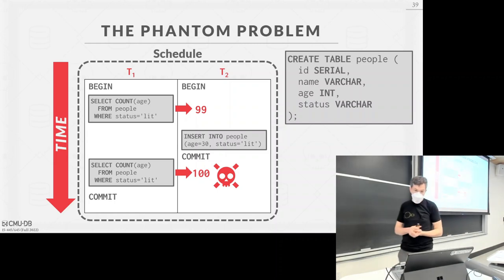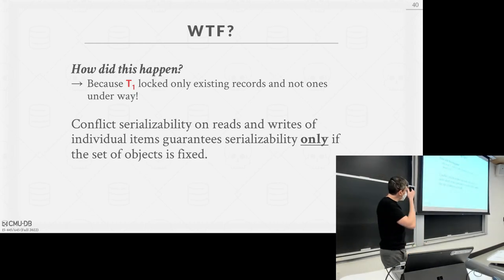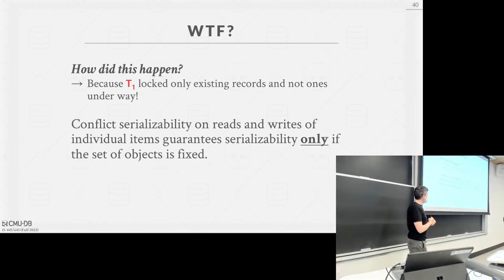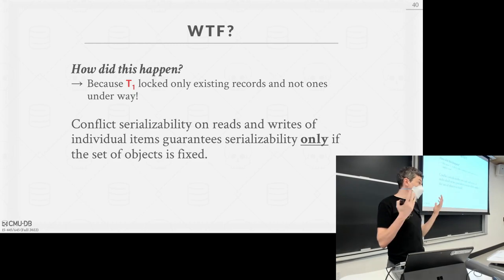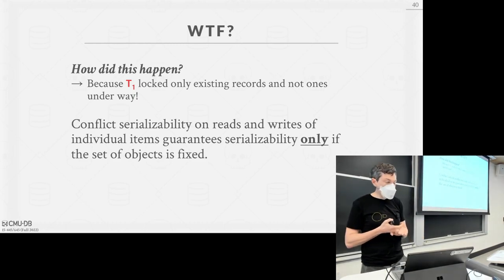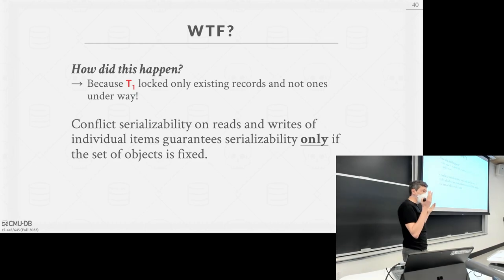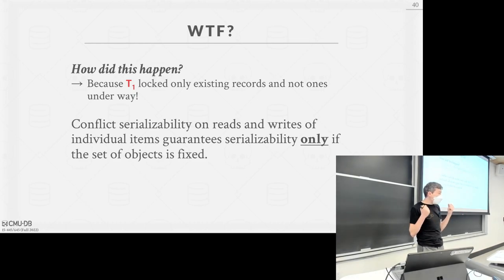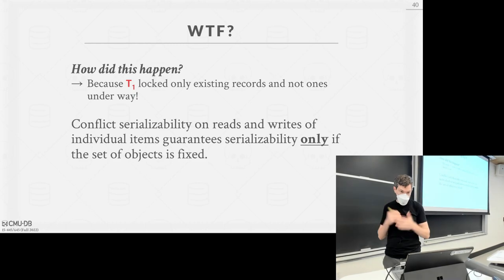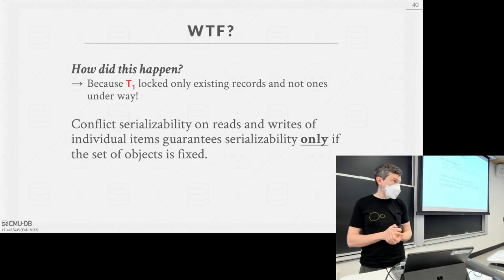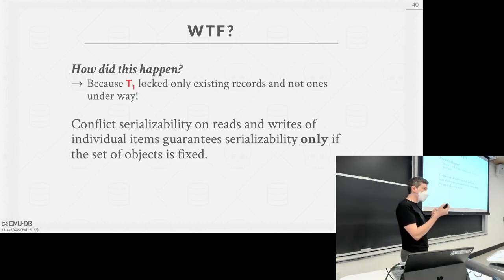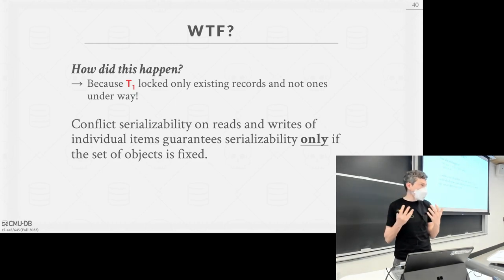The reason this happens is that with two-phase locking, T1 can only lock things that exist. It only locked the existing rows with shared locks as it read them, which didn't prevent the other transaction from inserting a new row. When I come back and run the query again, I get a different result — which would not happen in serial order. This is known as the phantom problem: tuples can appear and disappear like a ghost while my transaction is running.